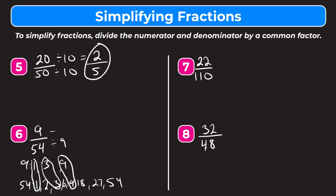So we divide both by 9. Some of you might have spotted that right away — if so, good job, you could have jumped straight to this step. 9 divided by 9 is 1, and 54 divided by 9 is 6. Looking at our numerator and denominator, the only common factor is 1, so we know we are done. Our answer is 1 sixth.